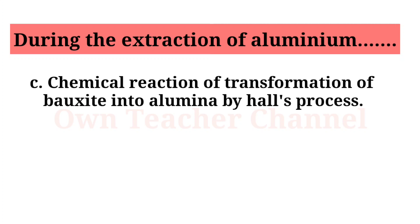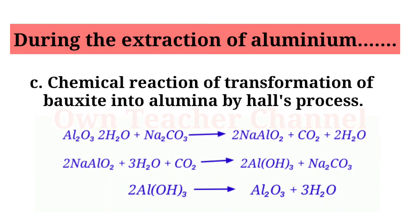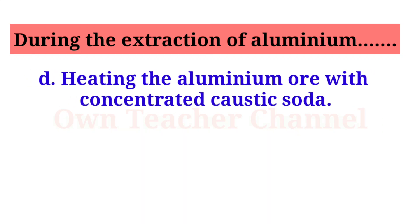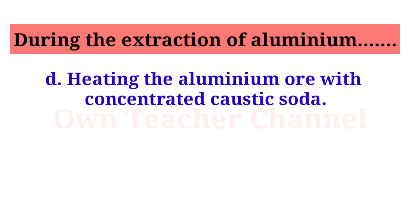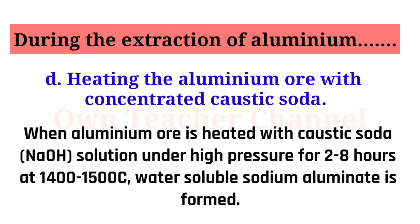Chemical reaction for transformation of bauxite into alumina by Hall's Process: In Hall's Process, sodium aluminate is converted to aluminium hydroxide, which is obtained as a precipitate by reaction with carbon dioxide. The precipitate of aluminium hydroxide is filtered, washed, dried, and calcined to obtain alumina. When aluminium ore is heated with concentrated caustic soda solution under high pressure for 2–8 hours at 140–150 degrees Celsius, water-soluble sodium aluminate is formed.